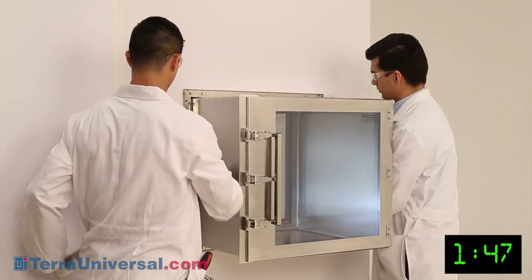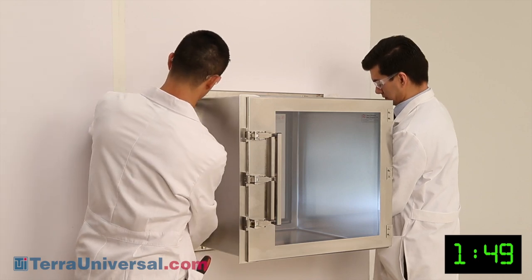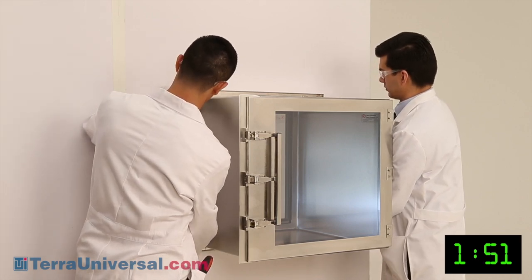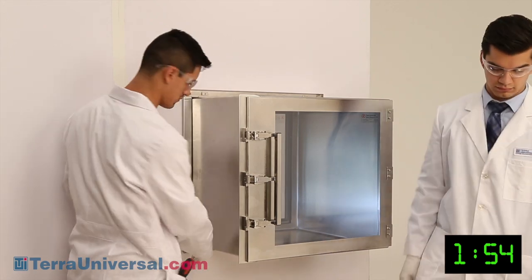Finally, install the bracket covers by snapping them onto the bracket clips. If desired, caulk the seams on the dirty side wall using silicone or other material.